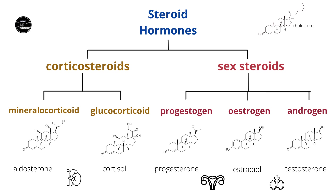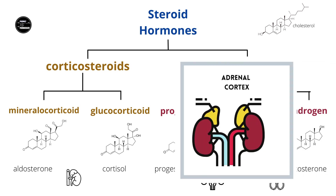The steroid hormones can be divided into the corticosteroids and the sex hormones. The corticosteroids are so-called because they are synthesized in the adrenal cortex of the adrenal glands, which are attached to the top of the kidneys. And there are two types of corticosteroids: the mineralocorticoids and the glucocorticoid steroids.